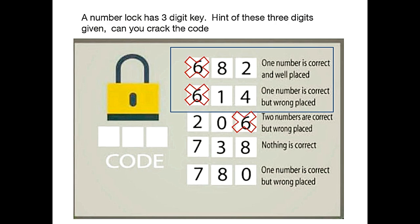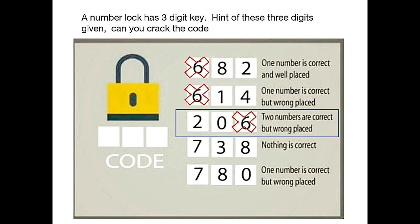Now let's move to the third condition. Third condition says two numbers are correct but wrong placed. There are only two numbers in the third condition, so we get our two numbers. But now we need to place these two numbers. Let's combine the first and third condition together to find how we can place these two numbers.